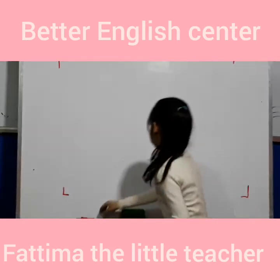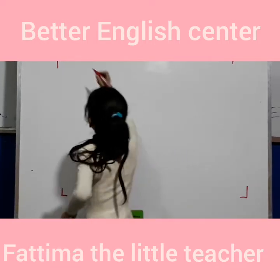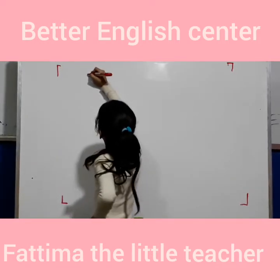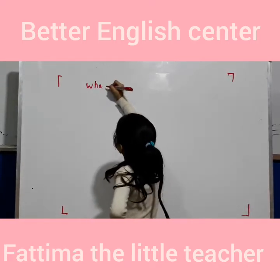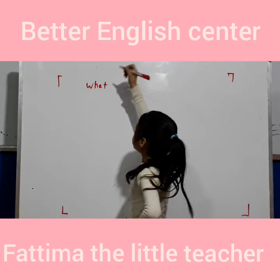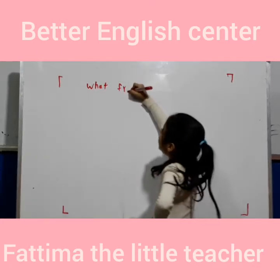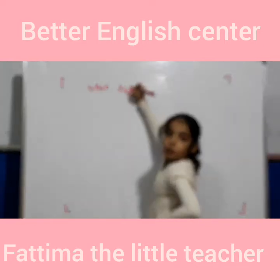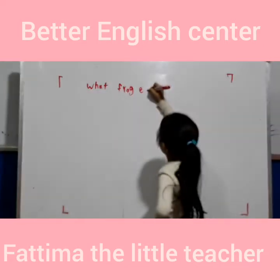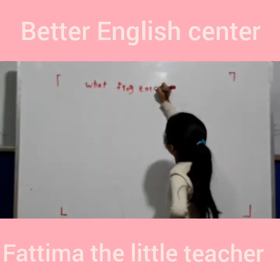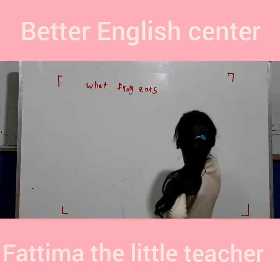Let's write it. W, H, A, T. What? F, R, O, G. What a frog? E, A, T, S. What a frog eats.